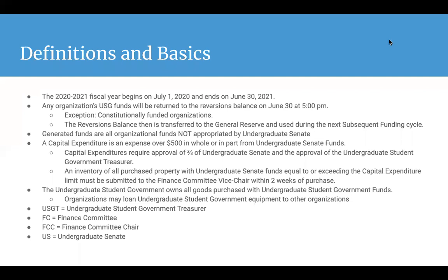First, let's start out with definitions and basics. The 2020 to 2021 fiscal year begins on July 1st, 2020 and ends on June 30th, 2021. Any organization's USG funds will be returned to the reversions balance on June 30th at 5 p.m. An exception to that would be constitutionally funded organizations. This reversions balance is then transferred to the general reserve and used during the next subsequent funding cycle.